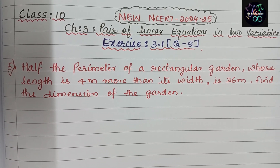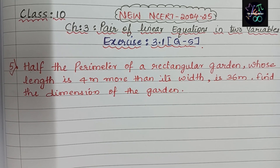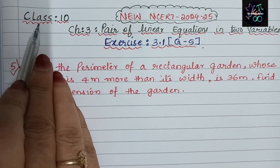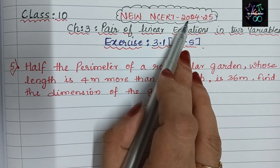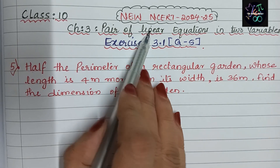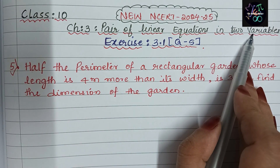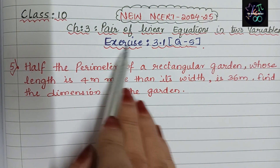Assalamu alaikum, hello everyone, welcome back to my channel The Maths Booth. Today I am here with Class 10th from the new NCERT textbook, Chapter: Pair of Linear Equations in Two Variables. In this video we are going to learn Exercise 3.1, Question Number 5.